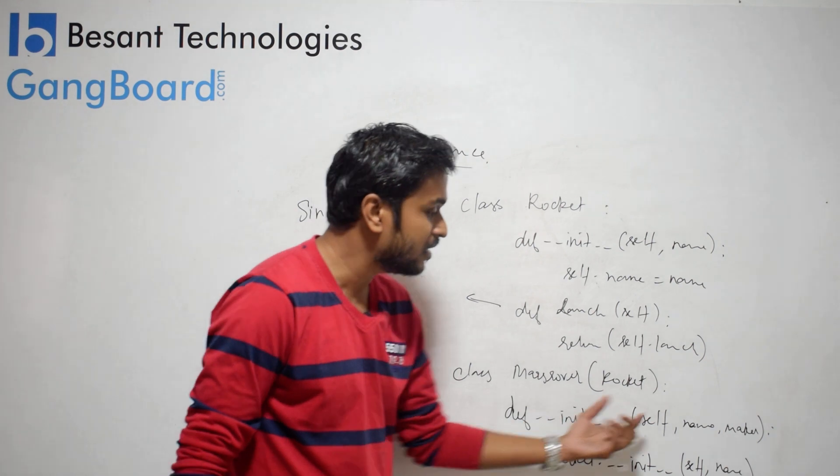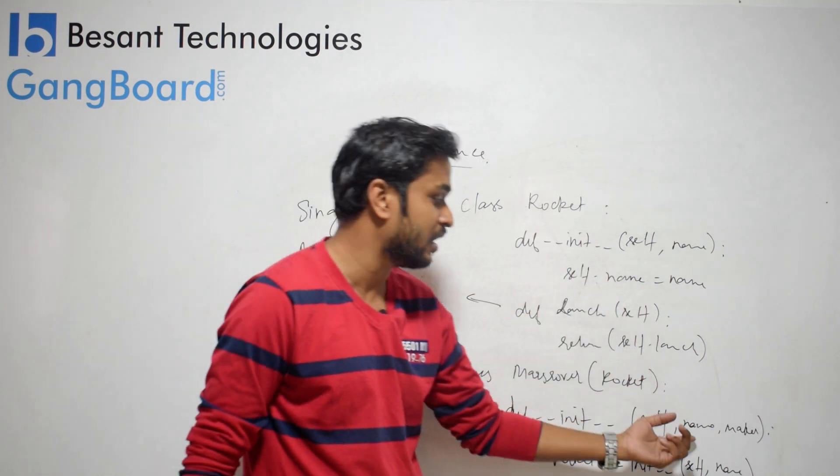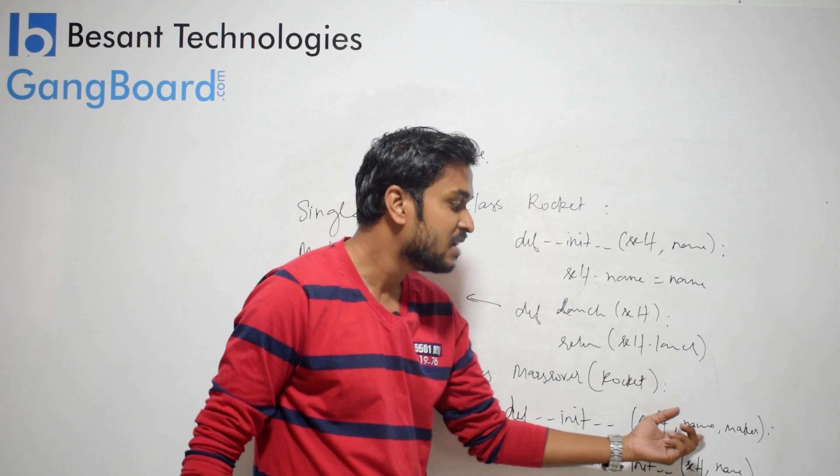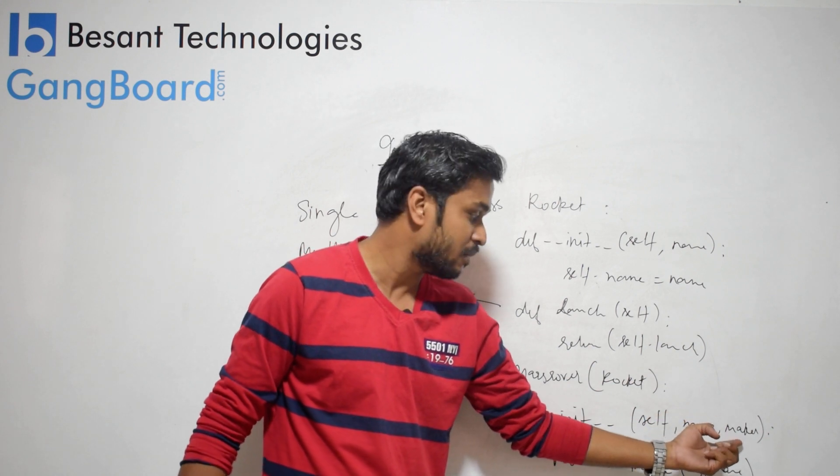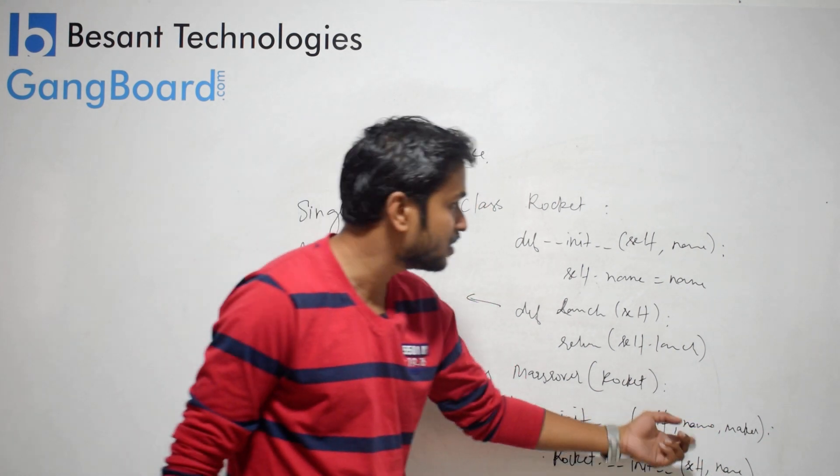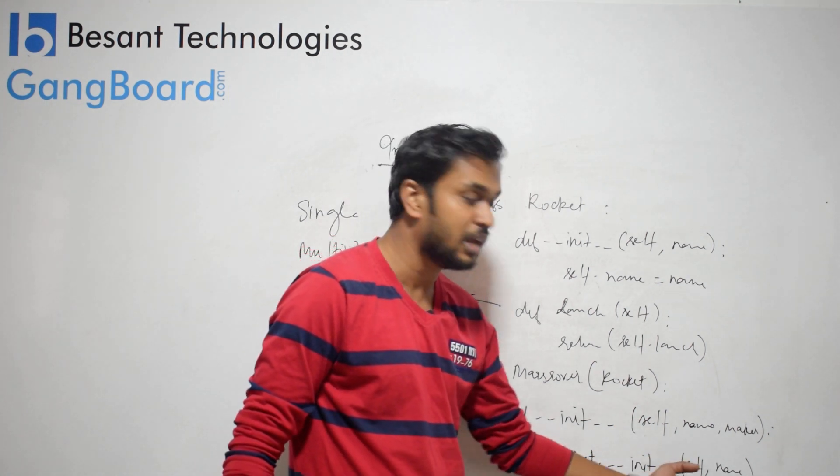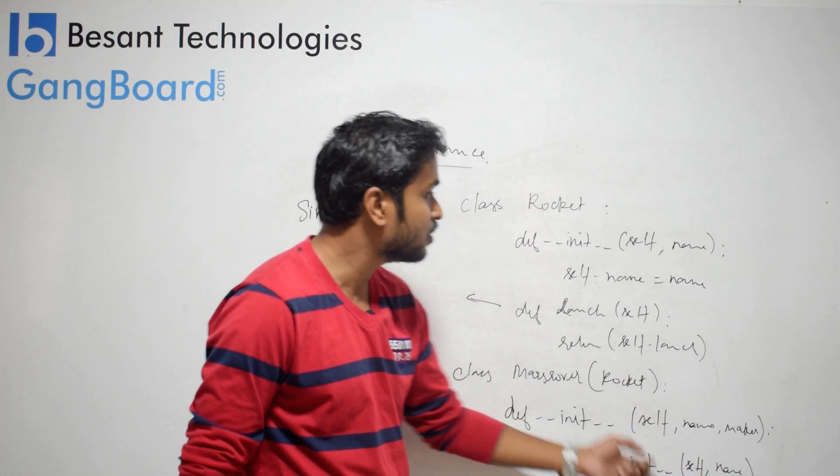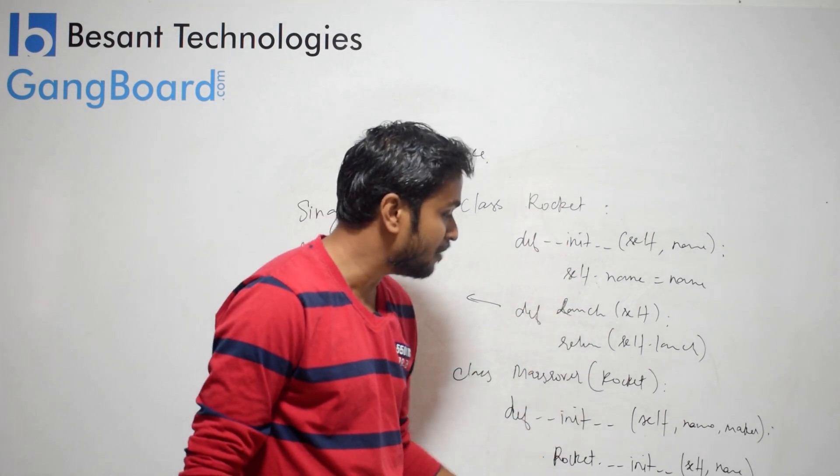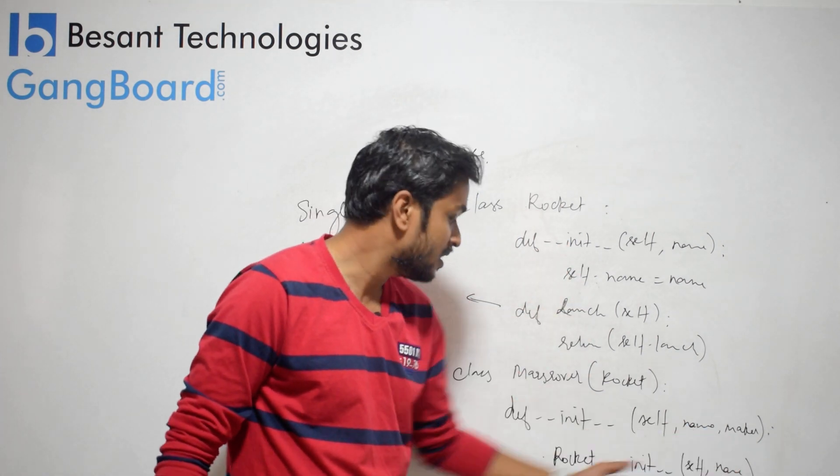In the bracket, I will create MarsRover. Then in init, we will create rocket arguments. The rocket argument is name. This is an extra argument, maker. We call rocket.__init__(self, name).